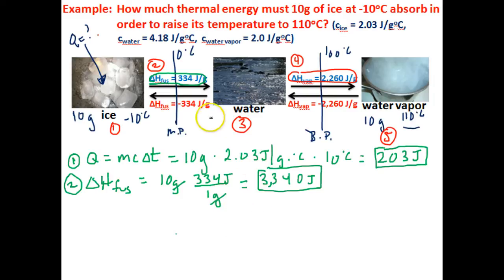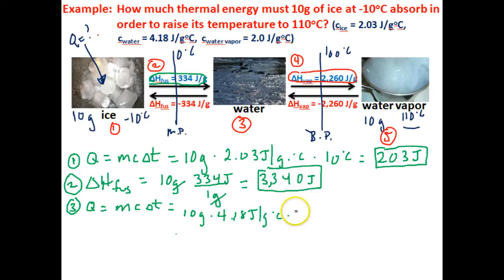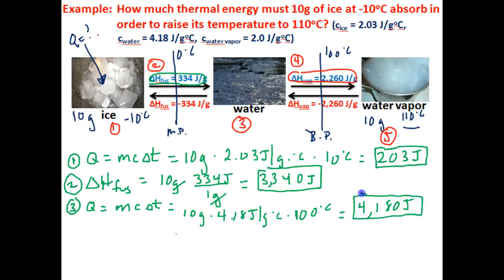In step 3, we need to figure out how much thermal energy this water will need to absorb to raise its temperature from 0 degrees Celsius to 100 degrees Celsius. We'll again use the thermal energy equation. We've got 10 grams of water, times the specific heat of water which is 4.18 joules per gram degrees Celsius, times the change in temperature as we go from 0 degrees Celsius to 100 degrees Celsius — that's 100 degrees Celsius. That gives us 4,180 joules to heat this water up from 0 to 100 degrees Celsius.